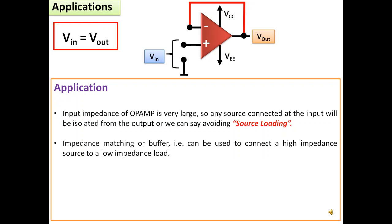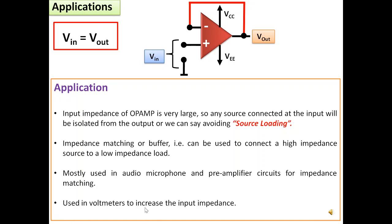Mostly used in audio microphone and pre-amplifier circuits for impedance matching. It is also used in voltmeters to increase the input impedance. This is very important because the main aim of the voltmeter is to measure the potential difference between two points without drawing any current from the circuit. If we can use an operational amplifier at the very input of the measuring device, it will restrict the current consumption from the original circuit.